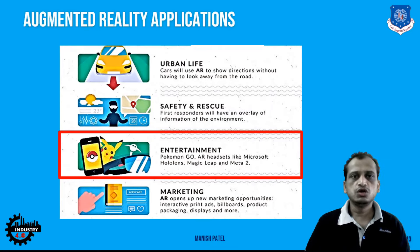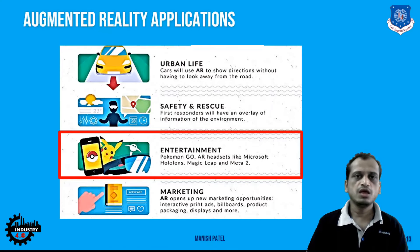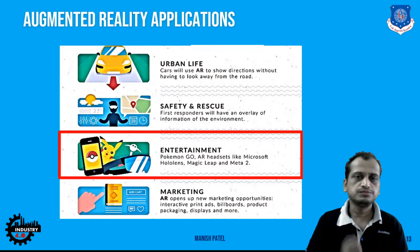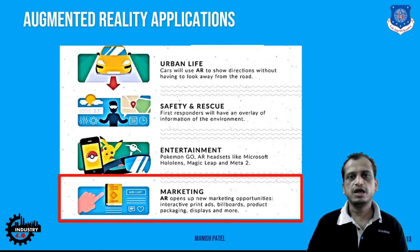In education and entertainment industries, AR is extensively used. The prime example is Microsoft HoloLens, which is used to view and study in depth the internal workings of organs and their components. In the gaming industry, Pokémon Go is a great example that uses augmented reality. In marketing, AR is used for billboard displays and packaging, allowing more interactive sessions and product information for customers.